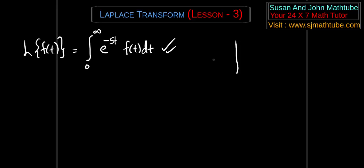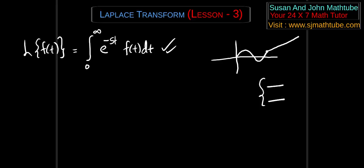A piecewise function is a function which behaves like more than one uniform function. For example, a graph might behave like sin x and then suddenly start behaving like a line. So the definition comes in parts — initially it behaves like sine, later on it behaves like a line. The domain specifies from where to where it behaves like sine and from where to where it behaves like a line. We call these piecewise functions.